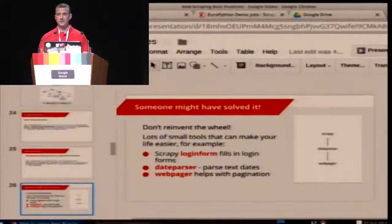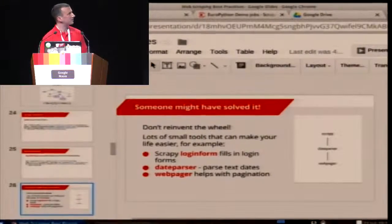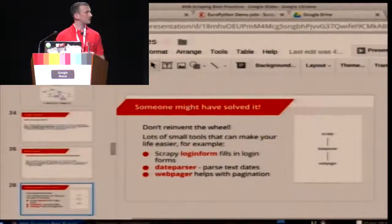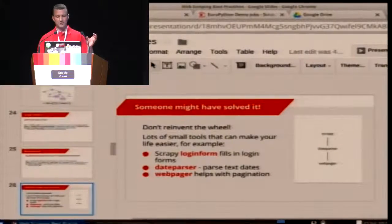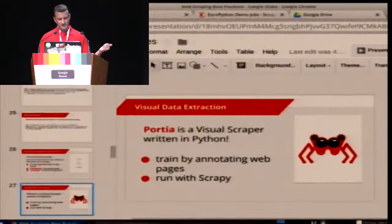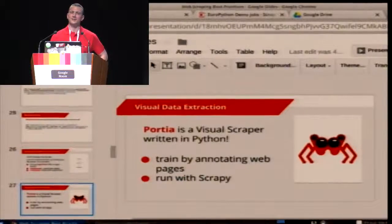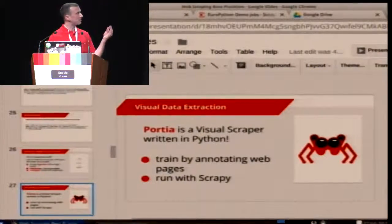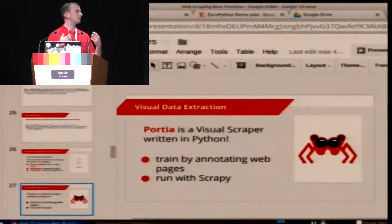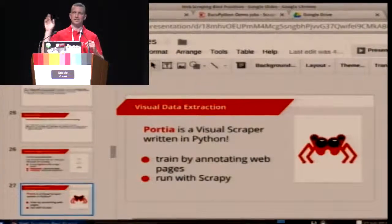Some examples of things we've done: we wrote a login form module for Scrapy that automatically fills in forms and logs into websites; a date parser module that takes textual strings and builds a date object; and webpager, which looks at an HTML page and pulls out links that perform pagination. Portia is a visual way to build web scrapers, applicable in many cases where you'd use XPath or Beautiful Soup — it has a nice UI where you can visually say 'I want this element, this is the title, this is the image.'